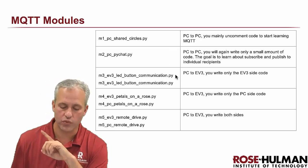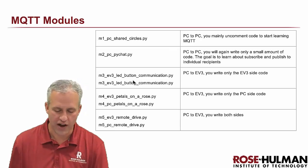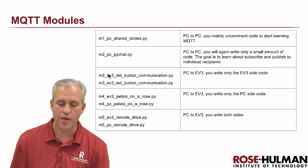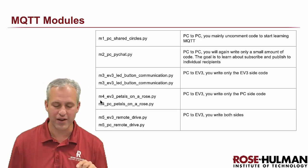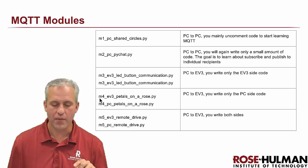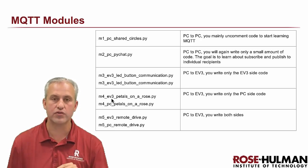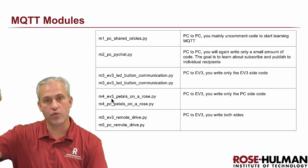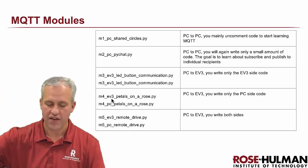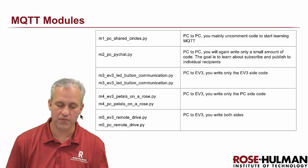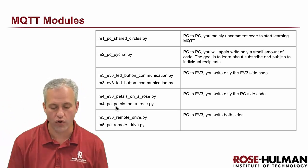And then the next ones — M3, M4, and M5 — you can see there are two files each. I'll point at M4 here. M4 EV3: if it says underscore EV3, that's a file you're going to run on the EV3. If it says M4 PC, that's a file you're going to run on your PC.